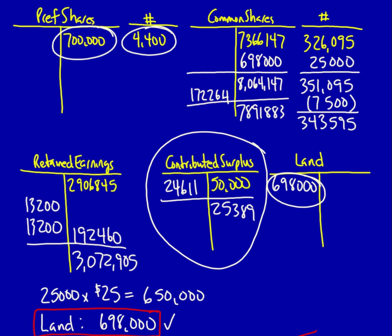Here we know we have the preferred shares, the preferred number of shares, we have the common shares ending balance, the common share number of shares, and we also have the contributed surplus and the retained earnings. We know what the net income was and we know the total amount of the preferred share dividend. Let's use this information to calculate earnings per share.